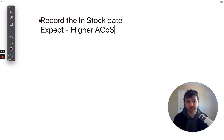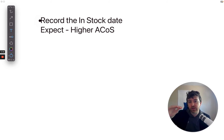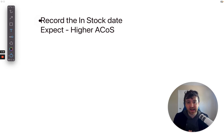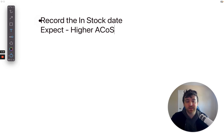Expect a higher ACOS in the first few days or week, and really you just want to monitor it and see how it looks. Look at performance before it went out of stock, then look at that first week and see if it's trending down — you're looking for ACOS to go down and conversion rate to go up. You want that to happen naturally without a lot of optimization. You'll have a higher ACOS in the beginning and it should trail down over time as you gain sales velocity and conversion rate history for each keyword.